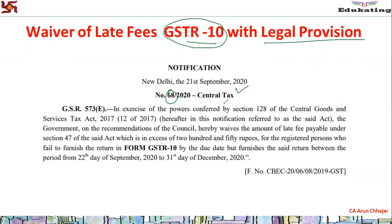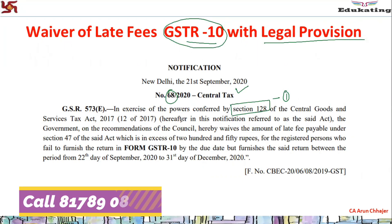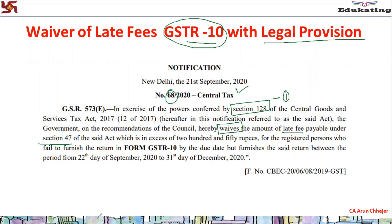The language of Notification 68 is: 'In exercise of the power conferred by Section 128 of the CGST Act.' We will discuss what power is given to the government under Section 128 in the second part of this video, along with all linked provisions. The government, on the recommendation of the Council, hereby waives the amount of late fees — the late fees which are levied under Section 47. We will also discuss what Section 47 is and link it with Section 128.